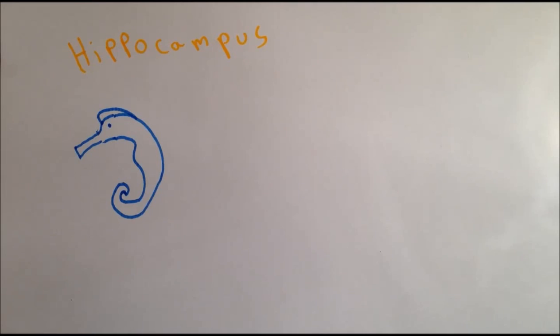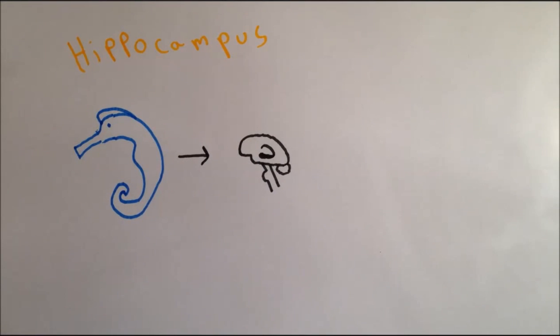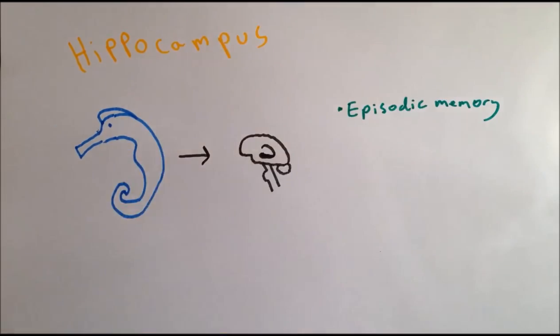The hippocampus, meaning seahorse, named for its curved shape, is an important component of the brain. Much is still unknown about the hippocampus, but it is now widely accepted that the hippocampus plays important roles in episodic memory and navigation.